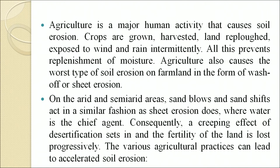Agricultural practices prevent the replenishment of moisture. Agriculture also causes the worst type of soil erosion on flat land in the form of wash-off or sheet erosion. On arid and semi-arid areas, sand blows and sand shifts act in a similar fashion as sheet erosion. When water is the chief agent, a creeping effect of desertification sets in and the fertility of the land is lost progressively.